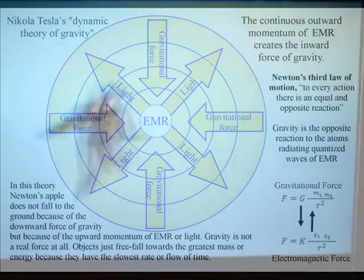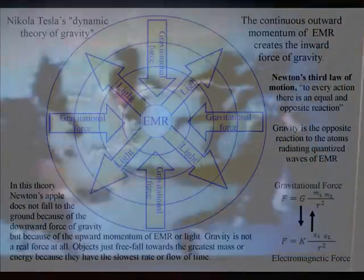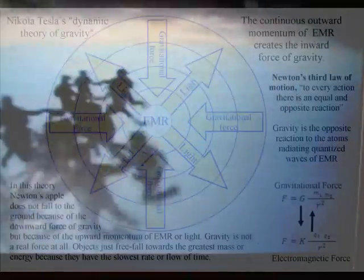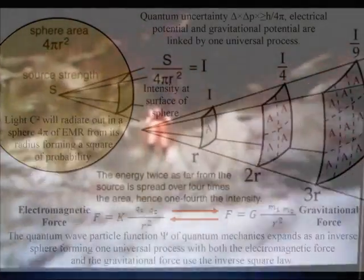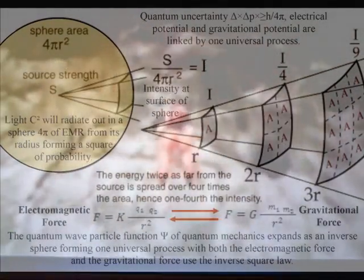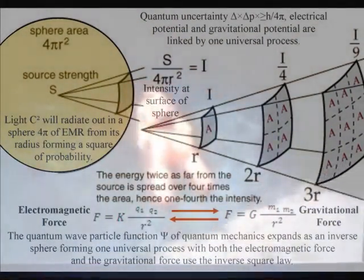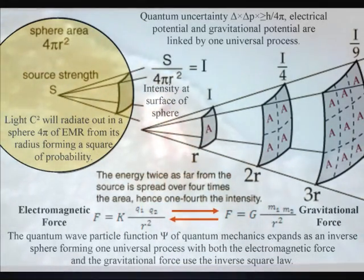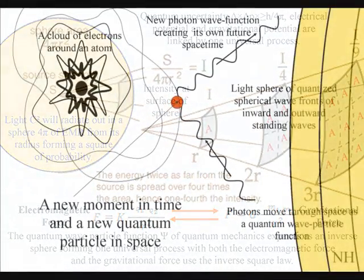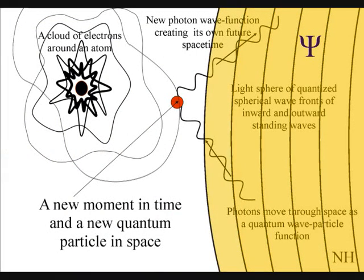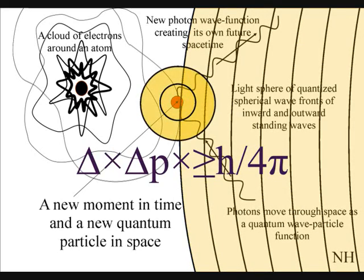Gravity is not a real force at all — it is a secondary force to the electromagnetic force. Objects just freefall towards the greatest energy because it has the slowest rate of time, or the greatest time dilation. I believe this can be seen in the mathematics, with both the gravitational force and the electromagnetic force having the inverse square law. We have the inverse square law because the surface area of the light sphere increases with the square of the radius, thus the strength of the gravitational field is inversely proportional to the square of the distance from the source. There is no mysterious action at a distance — the gravitational field will work at the speed of light, because it is an integral part of one universal process with the electromagnetic force.